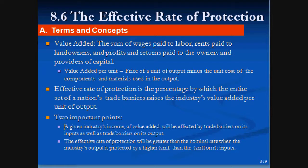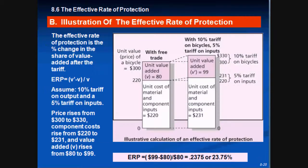There are two important points. A given industry's value added will be affected by the trade barriers on its inputs as well as the trade barriers on its outputs. Also, the effective rate of protection will be greater than the nominal rate when the industry's output is protected by a higher tariff than the tariff on its inputs. The effective rate of protection is the change in value added after the tariff.